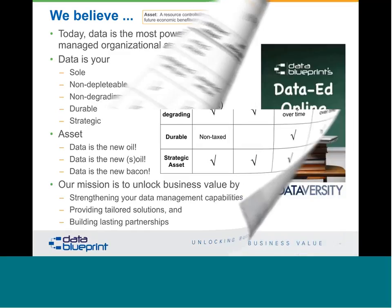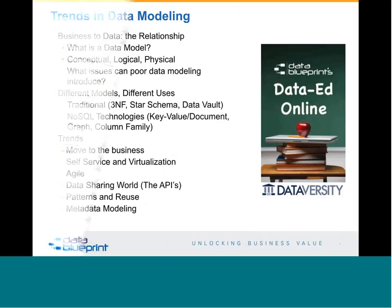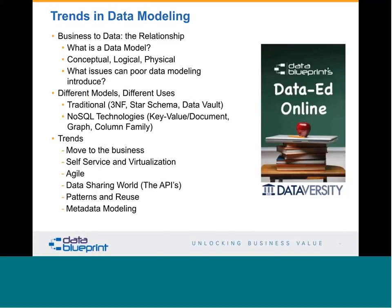There are three sections for today. First, business to data — what's the relationship. We'll talk about what is a data model, what are the conceptual, logical, and physical levels, and what issues poor data modeling can introduce. Then Michael will dive into different data models and different uses — having the right tool and understanding where to apply it in the right context. Then we'll talk about trends: self-service, Agile, the data sharing world, patterns and reuse, and metadata modeling to finish up at the top of the hour.